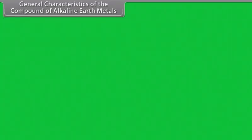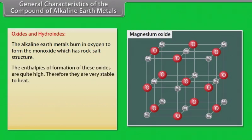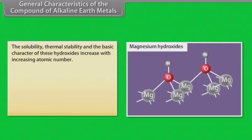General characteristics of the compound of alkaline earth metals. Oxides and hydroxides: The alkaline earth metals burn in oxygen to form the monoxide which has rock salt structure. The enthalpies of formation of these oxides are quite high. Therefore, they are very stable to heat. Oxides of these elements are ionic in nature except BeO. All these oxides are basic in nature except BeO and react with water to form sparingly soluble hydroxides. The solubility, thermal stability and the basic character of these hydroxides increase with increasing atomic number.